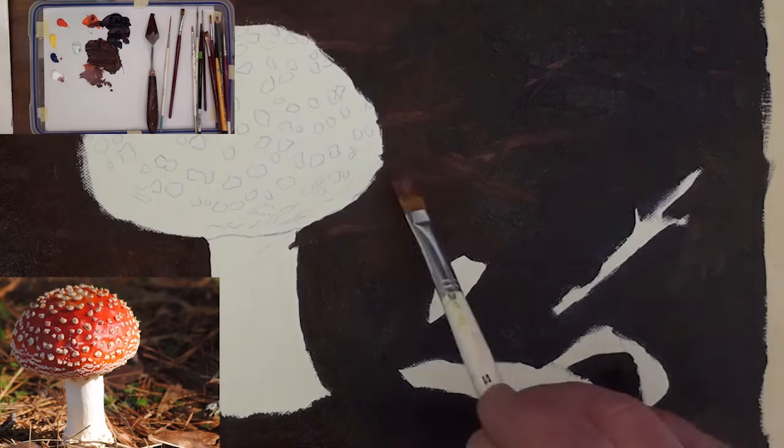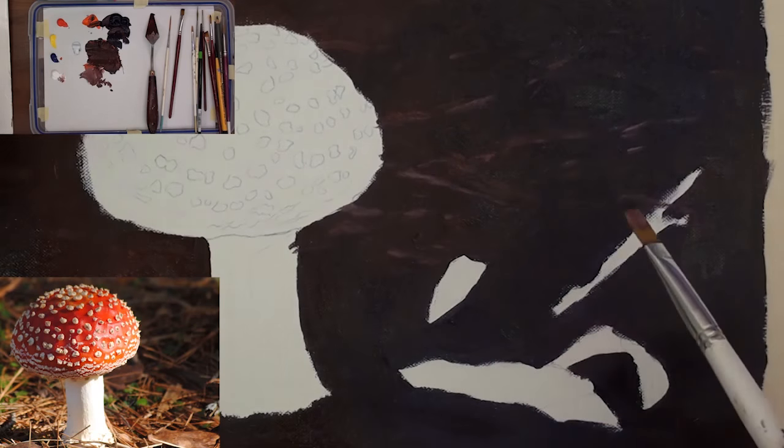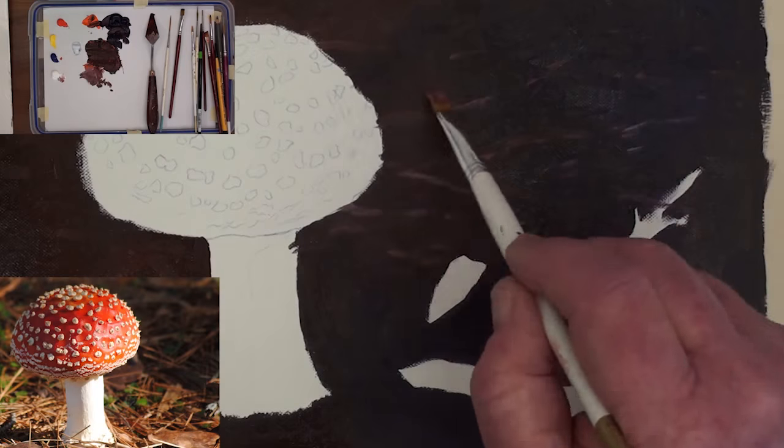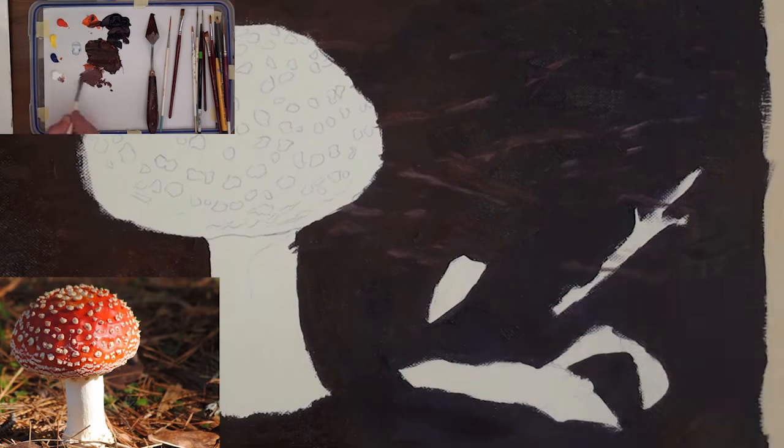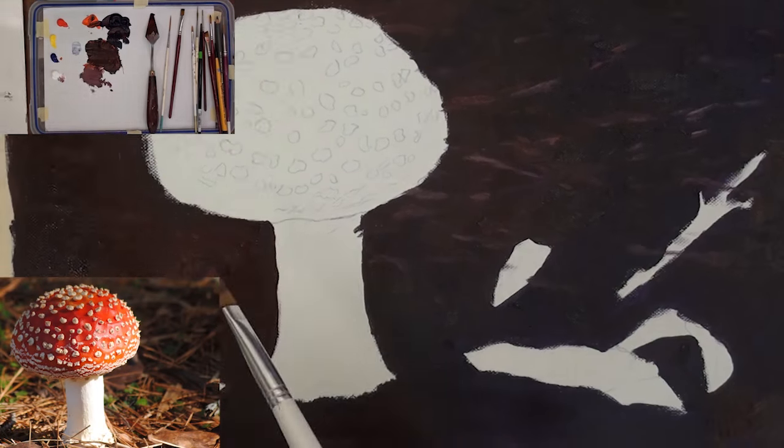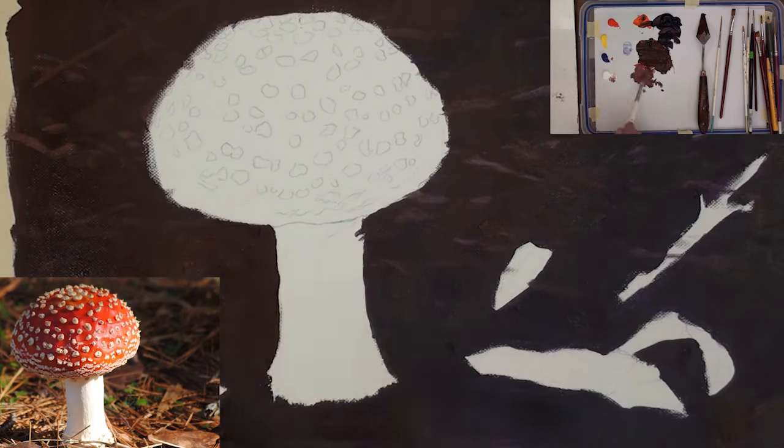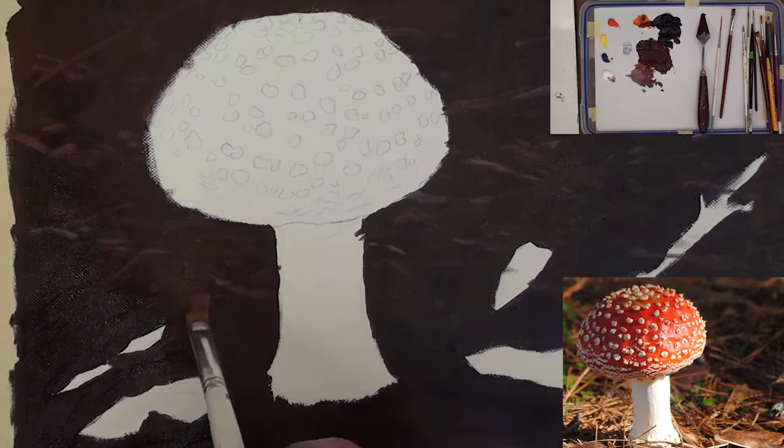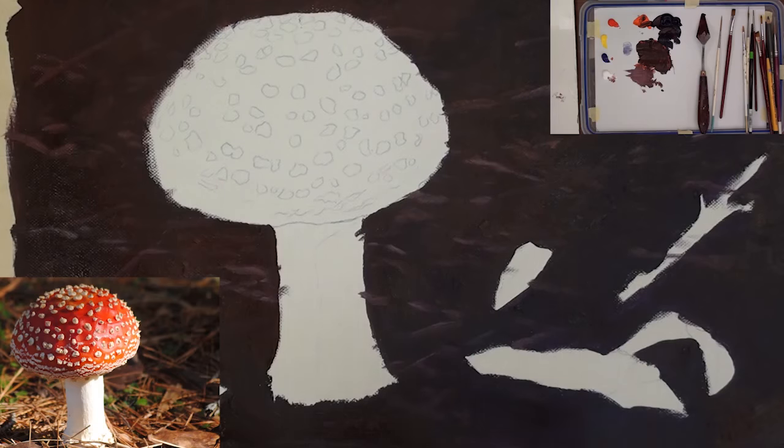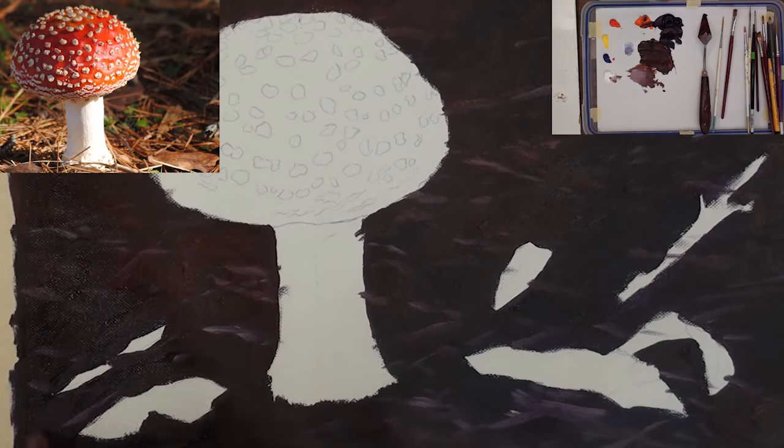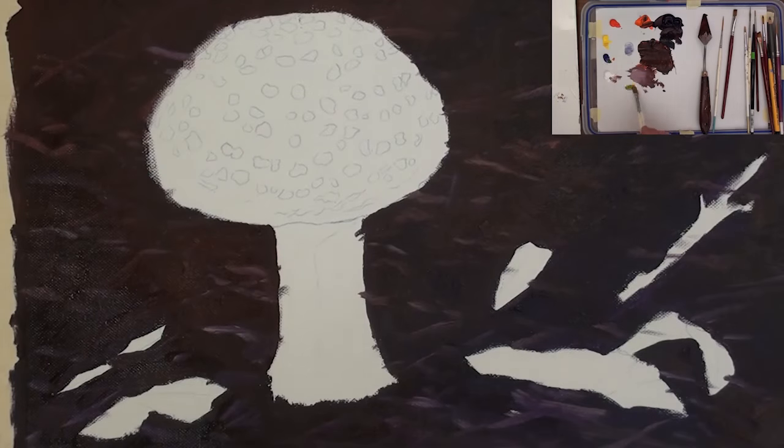Lighten the background mix with some orange and then very loosely and randomly stroke in the loose sticks using the edge of a flat brush. Keep some almost visible and some slightly lighter. Remember they are all in the shadow area.